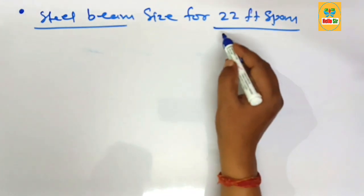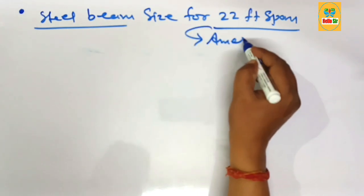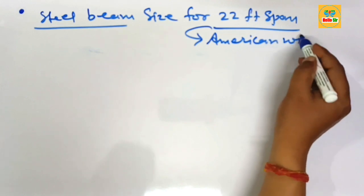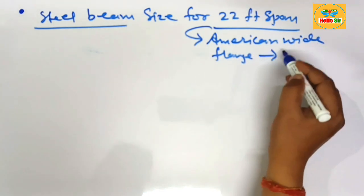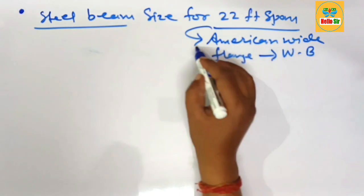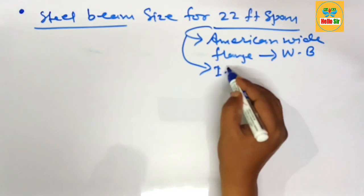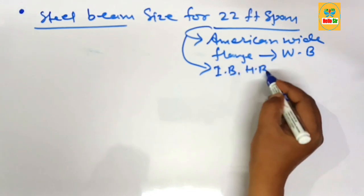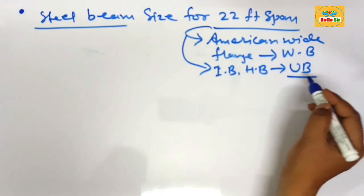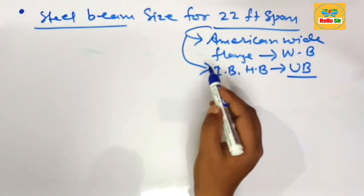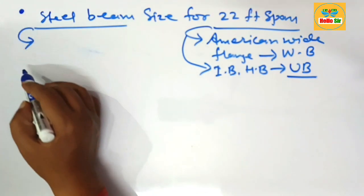As you know, the steel beam is an American wide flange beam, denoted by W beam. As per standard practices, their cross-section looks like an I-beam or H-beam, and it is also called a universal beam or U beam. It is used in the steel industry for different civil construction work.